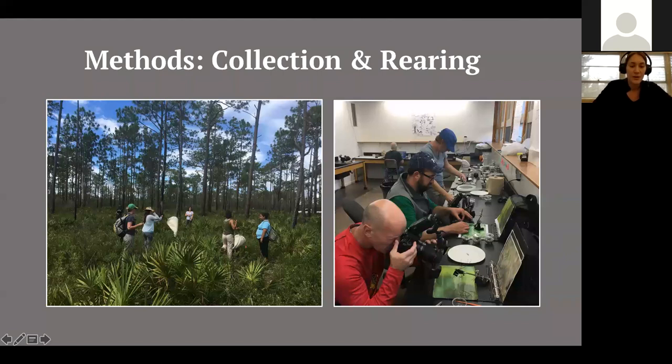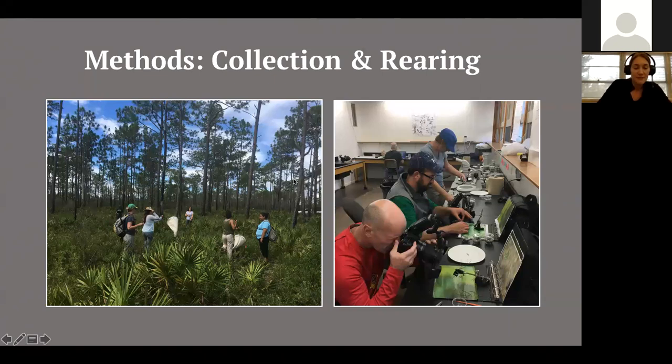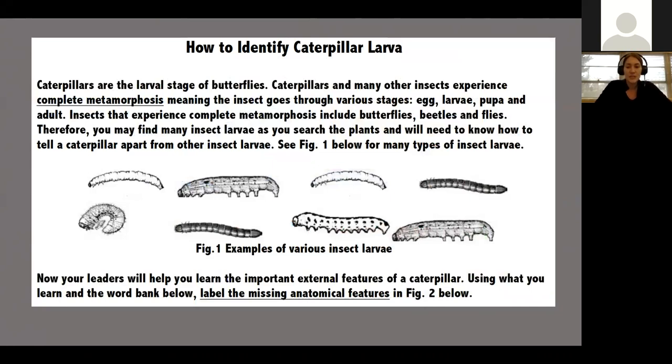That's the background on our research. You're here today to get an idea of how to incorporate our research into your classroom. I'm going to talk about collection and the rearing process — field collection and then everything we do in the lab. The first step is being able to identify a caterpillar. We teach the teams how to identify caterpillars because the insect world has fascinating overlaps and dissimilarities.